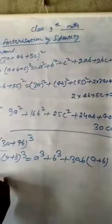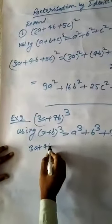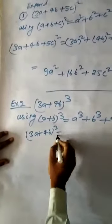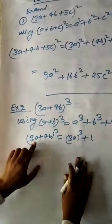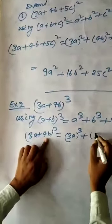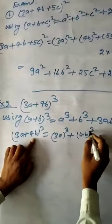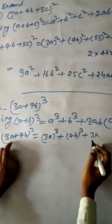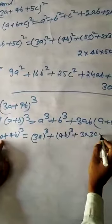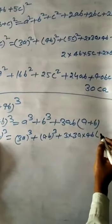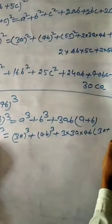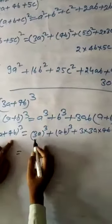Using this identity, A plus B whole cube equals A cube plus B cube plus 3AB into A plus B. Then we get 3A plus 4B all cube equal to 3A all cube, A equals this, B equals this, plus 4B all cube plus 3 into A, A value 3A, into B, B value 4B, into 3A plus 4B.